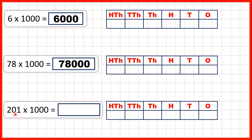And finally we have 201 times one thousand. That's 201,000. 201 times one is 201 so 201 times a thousand is 201,000.